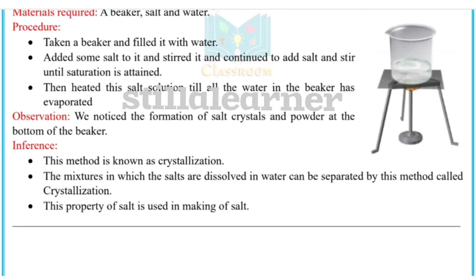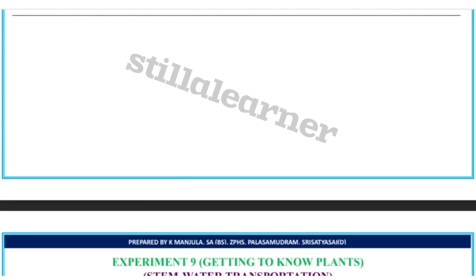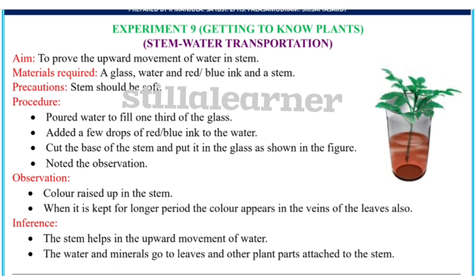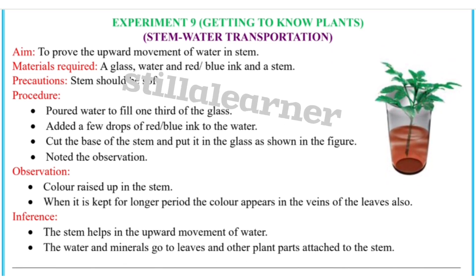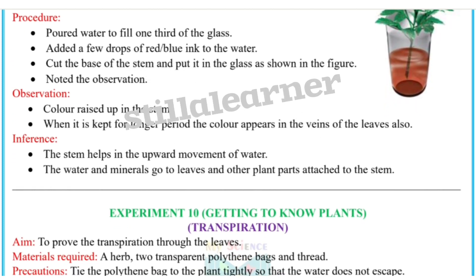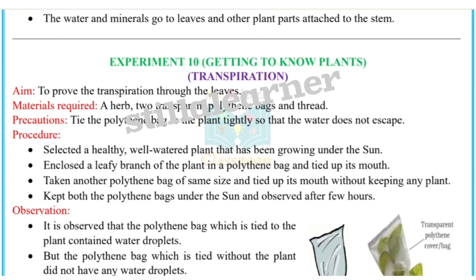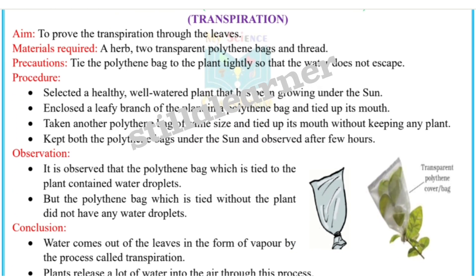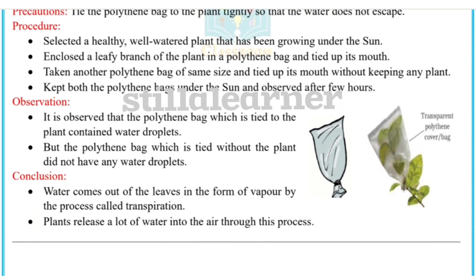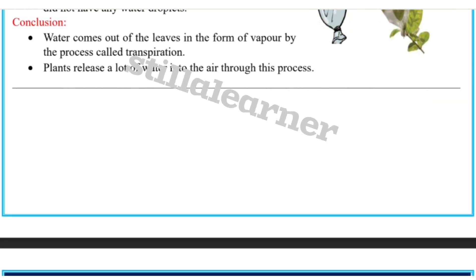Experiment 9 is getting to know plants — stem water transportation. Just try to do this at home by yourself; it will be amazing to find the results. Experiment 10 is getting to know plants — transpiration.